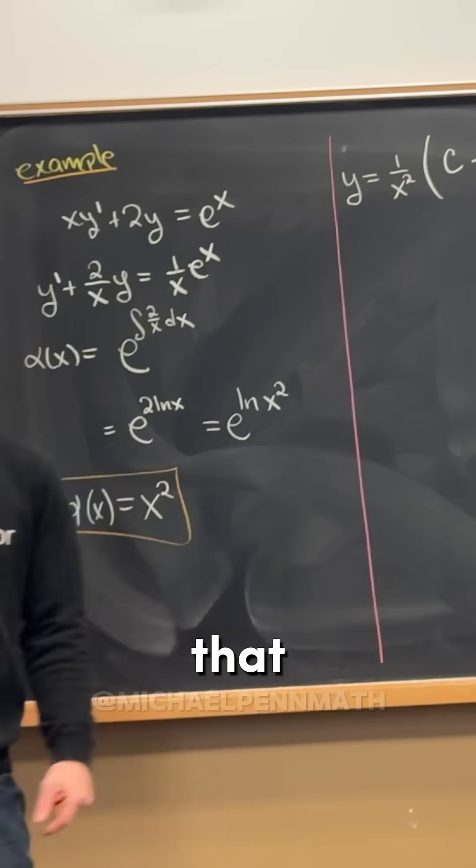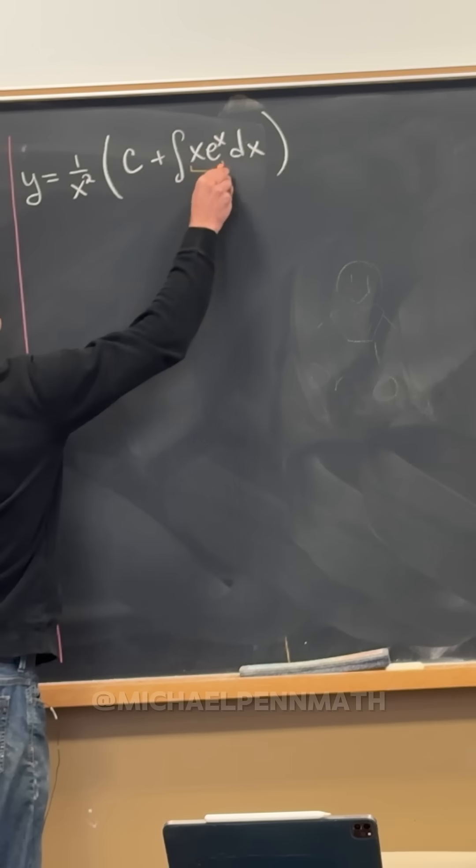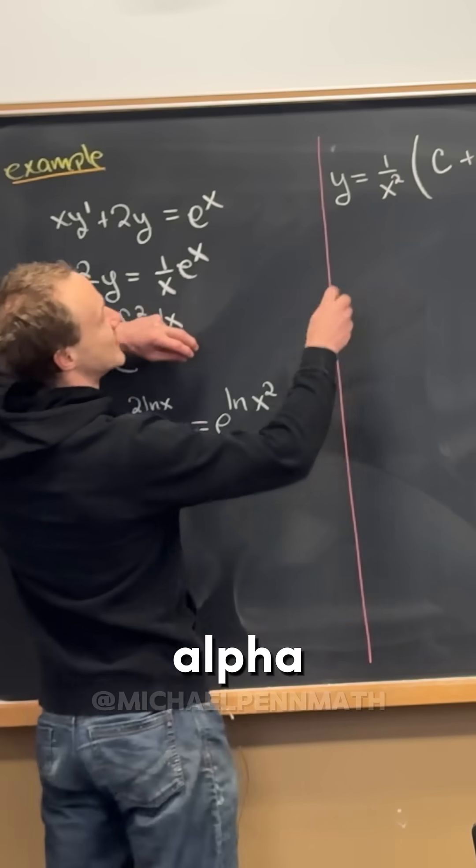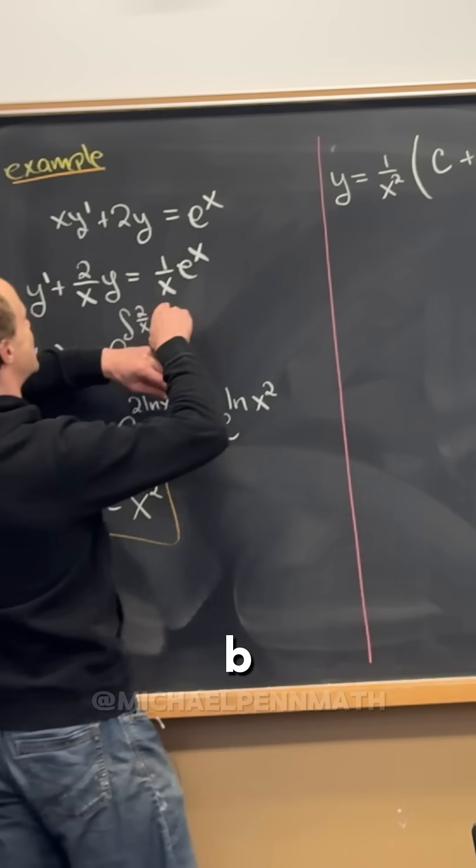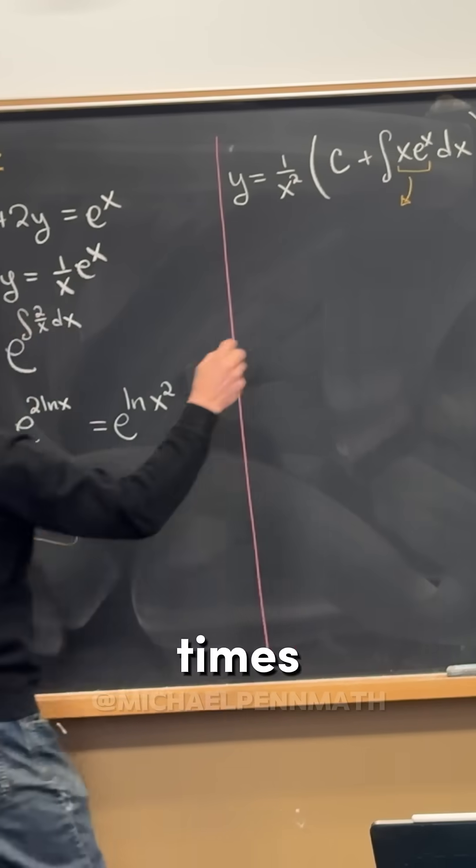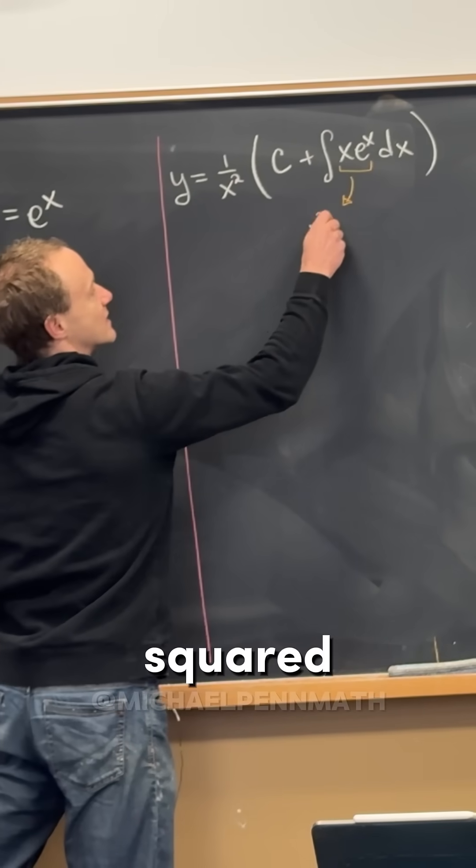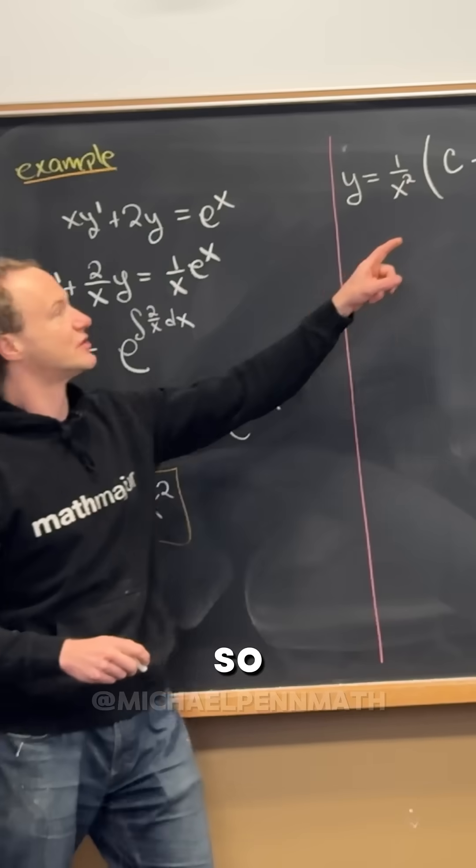Okay, so this comes from alpha times b. So b is 1 over x times e to the x. We have x squared times 1 over x times e to the x.